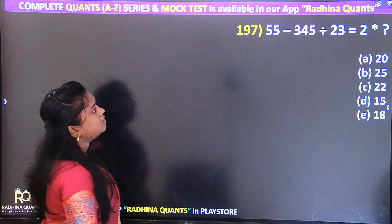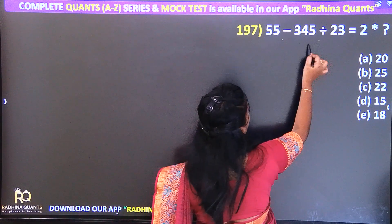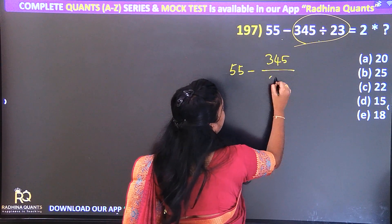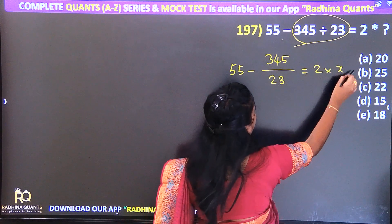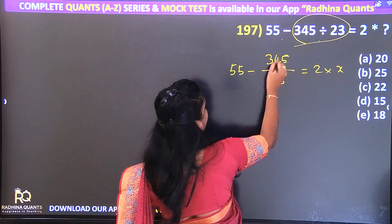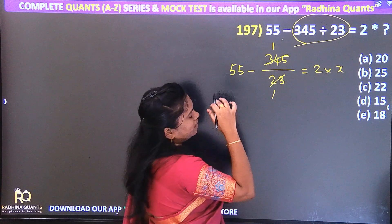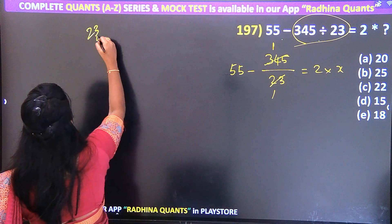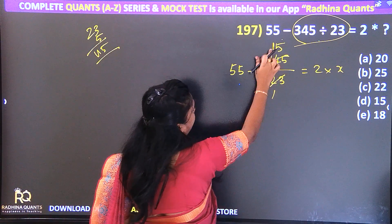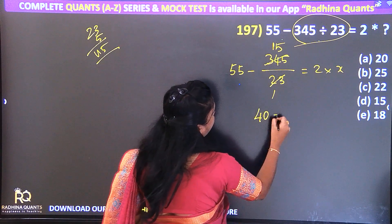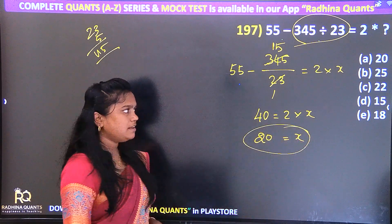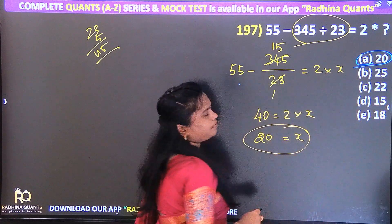Question 197: 55 minus 345 divided by 23 equals 2 into x. Cancel 23 directly since it is a prime number — 1 time, remain 11 times 5 = 115. 23 is 5 times. 115 equals 1; then 15 cancels. 55 minus 50 equals 40 divided by 2, so x equals 20. Option A is the right answer.